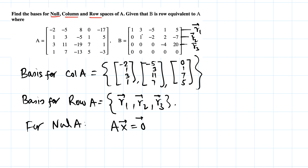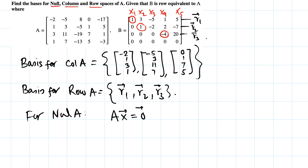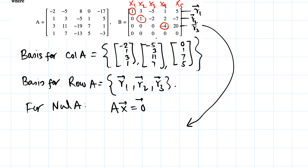With variables x1, x2, x3, x4, x5: x1, x2, and x4 correspond to pivot columns, so they are basic variables. x3 and x5 have no pivots, making them free variables. We'll use the echelon form to back-substitute and find each basic variable in terms of x3 and x5.